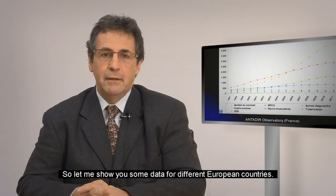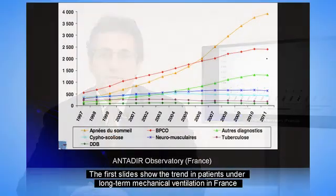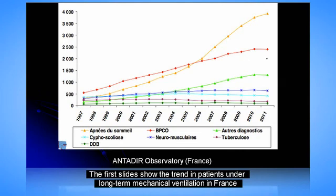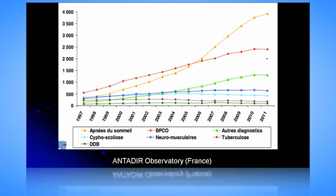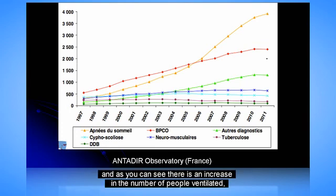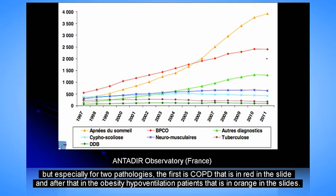Let me show you some data for different European countries. The first slide shows the trend in patients under long-term mechanical ventilation in France. As you can see, there is a progressive increase in the number of patients ventilated, especially for two pathologies: COPD, shown in red in the slide, and obesity hypoventilation patients, shown in orange in the slide.